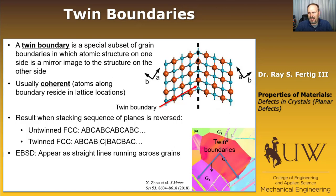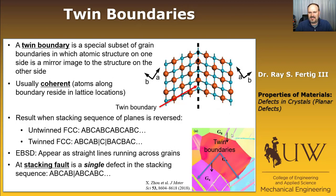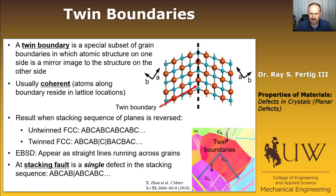A related but distinct defect is a stacking fault — a single defect in the stacking sequence. In FCC, we go ABCAB, and then instead of C, we go back to A, but the crystal still repeats. It's not a mirror image — that's the stacking fault — and it has higher energy than the correct stacking sequence. Twins in general are higher energy than bulk, but lower energy than high angle grain boundaries, because they're closer to where they should be.